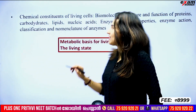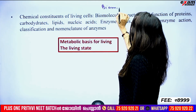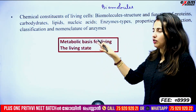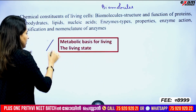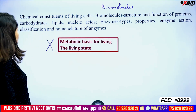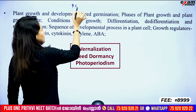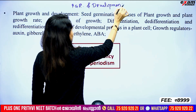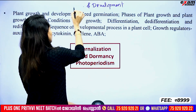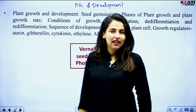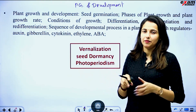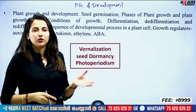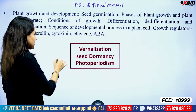This is the chapter of Biomolecules. If you don't have any problems with biomolecules, the deleted topic is: Metabolic Basis for Living — that topic is deleted. Deletions: there are zero additions. Then, Plant Growth and Development: in this chapter, you will delete these three topics — Vernalization, Dormancy, and Photoperiods. These topics are completely deleted.